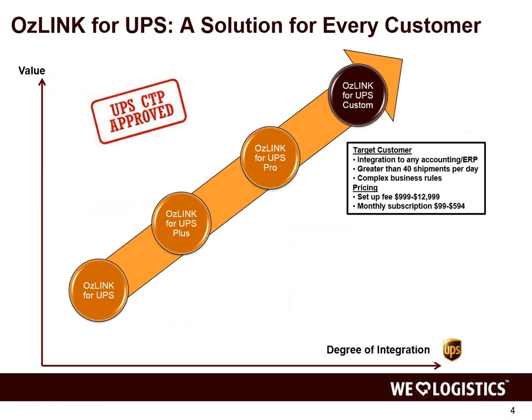The next solution is OzLink for UPS Plus — a more advanced rating solution that provides multi-package, 100 weight, includes services like SurePost, and has the ability to show both negotiated and list rates on the same screen. It starts at $16 a month per user, with a multi-user pack as well. Customers can activate that on the OzLink website. We do have a dedicated training session specifically for those two products every Friday at 11 a.m. Eastern time — you can sign up on our website.